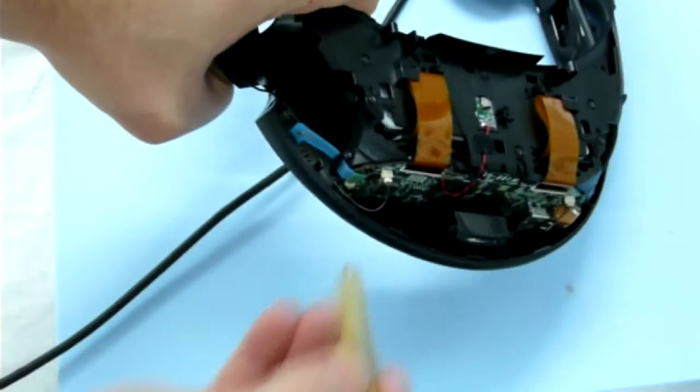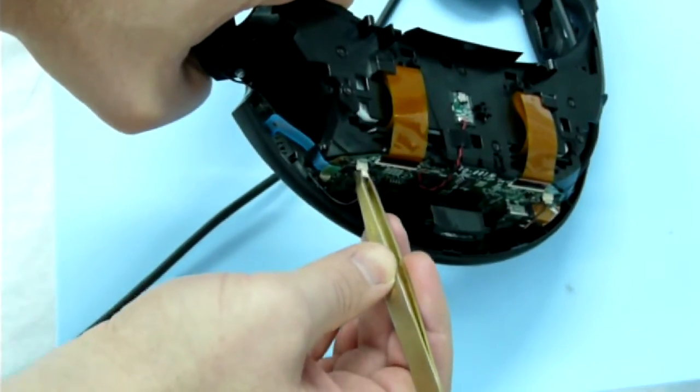There are four more screws hidden under the panels, holding the headphones, two for each. Disconnect the headphones, unscrew and remove them.